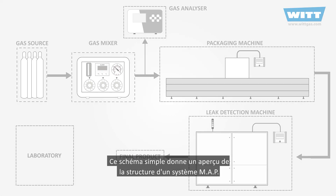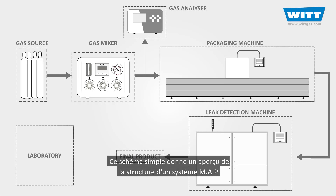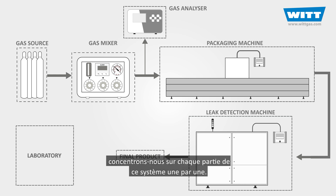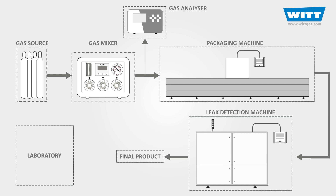This simple schematic gives an overview of the structure of a MAP system. As you can see, it's composed of different parts. To better understand this structure, let's focus on each part of this system one by one.